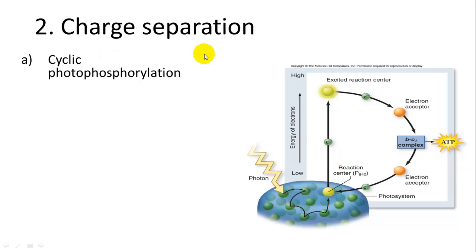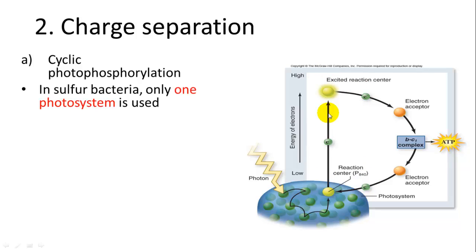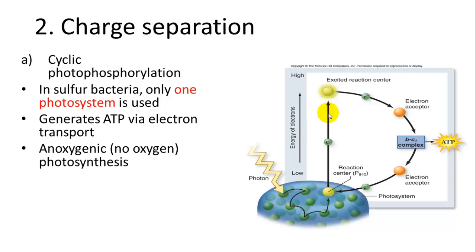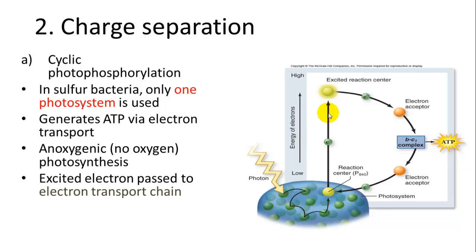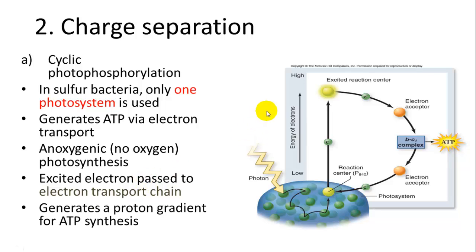There are different types of photosynthesis depending on the organism. Cyclic photophosphorylation occurs in sulfur bacteria — the electron gets excited, passed down an electron transport chain, and excited again within the same photosystem. This generates ATP via a proton gradient, requires no oxygen, and is relatively simple.